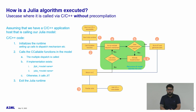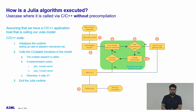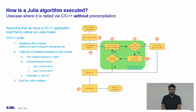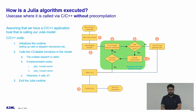To better understand the real-time constraints, it is useful to check how Julia algorithm execution works when the library is not pre-compiled. There are two sides: the C++ source application and the Julia model. The C++ source initializes the Julia runtime and prepares the data to be passed to the Julia model. When C++ calls the ccallable interface, the Julia engine invokes the multiple dispatch mechanism. If the implementation already exists, the program counter jumps almost immediately to the entry point of the invoked Julia function. If the function does not exist in the lookup table, just-in-time compilation takes place, the process is suspended, and the JIT compiler generates the requested code, then execution restarts from the entry point of the compiled function.